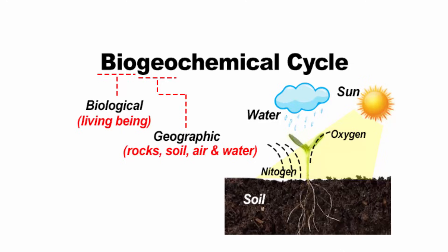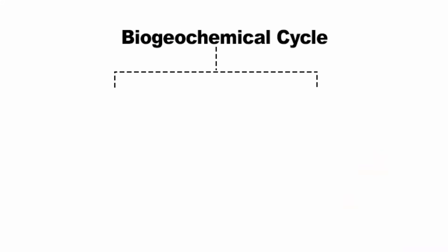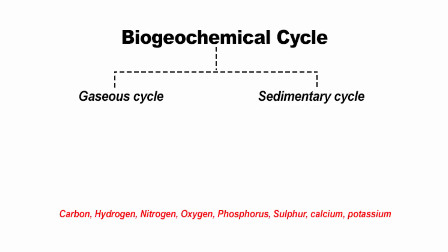Now that you have understood what a biogeochemical cycle is, you need to understand that it is basically of two types. The reason is that if you look at the important life-forming vital chemical elements of our environment — carbon, hydrogen, nitrogen, oxygen, phosphorus, sulfur, calcium, potassium, etc. — they can be easily segregated in the form of solid and gaseous form.